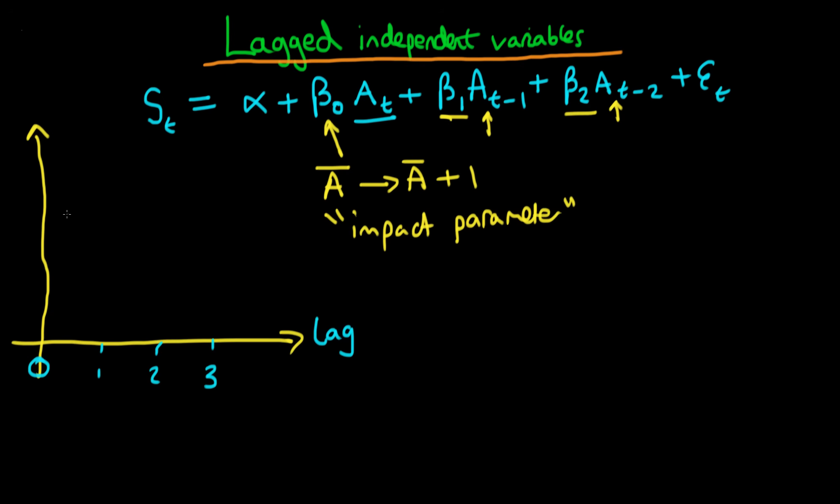So the idea here is that on the y-axis we actually graph the individual coefficient values. So we might think that advertising has its largest impact today, so perhaps beta naught is somewhere like that.